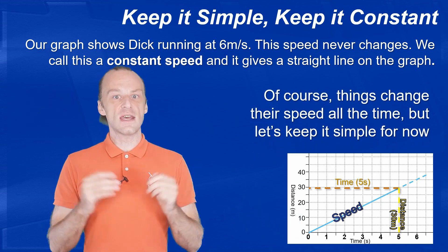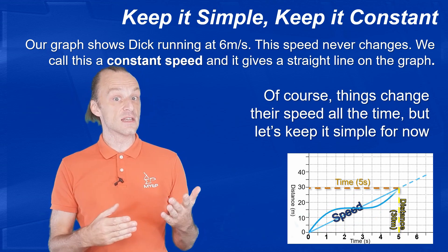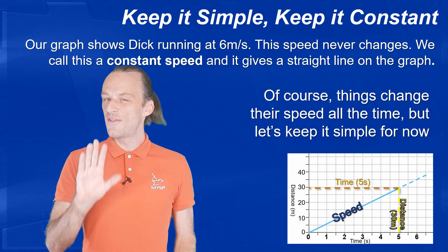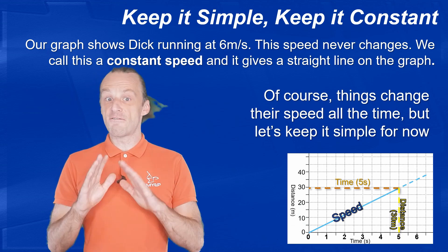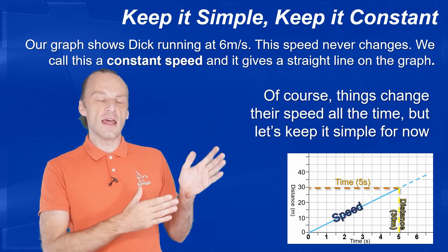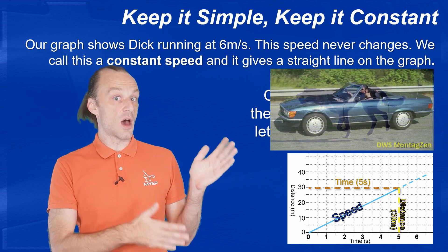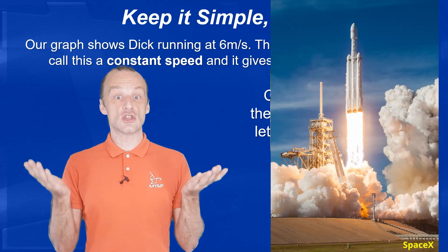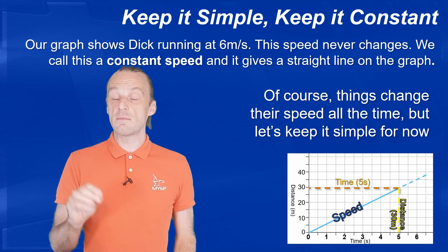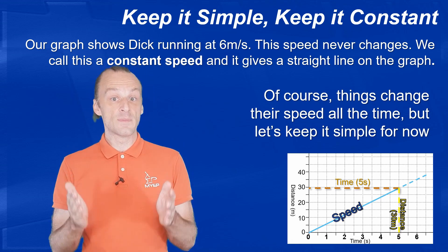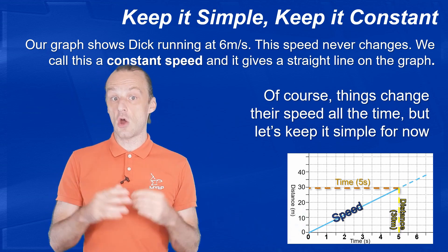Of course, things change their speed all the time. And there are many other ways that Dick could run 30 meters in 5 seconds. But for now, let's keep it simple. You can see that physics makes things very abstract. We can't tell from this graph that this is Dick running. It could be an animal or a car driving or even a rocket ship. It doesn't matter. All we need to see is the distance and the time and we can work out the speed. And if it's a straight line on a distance time graph, that means the speed is constant.